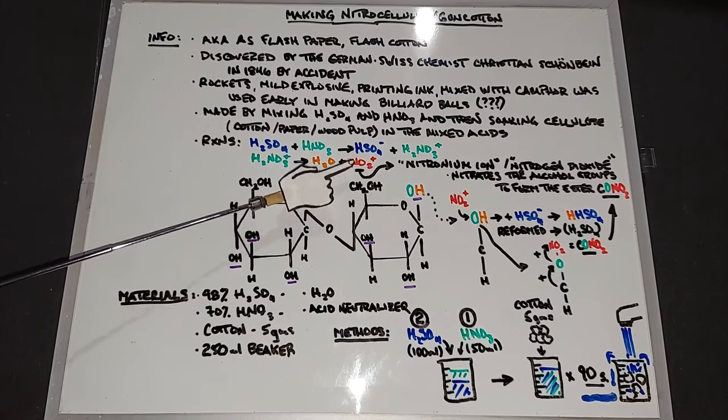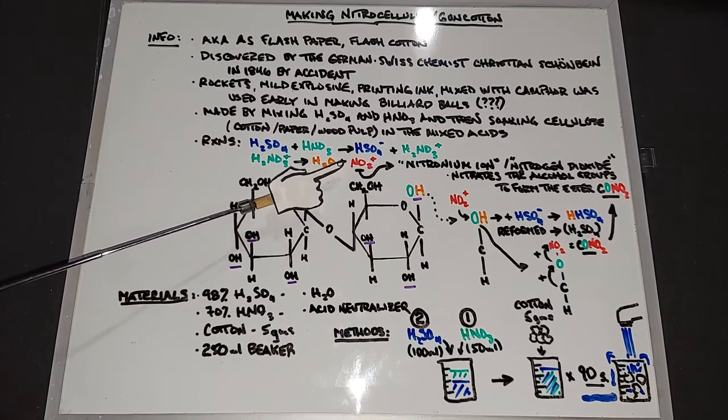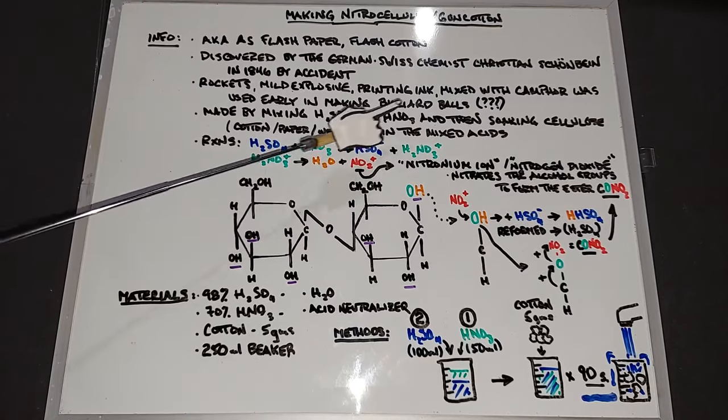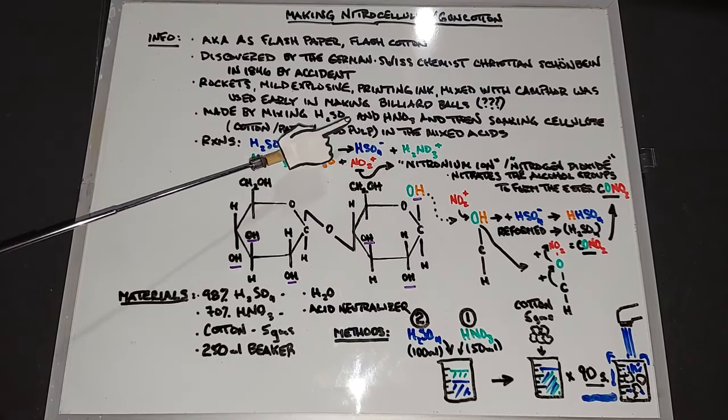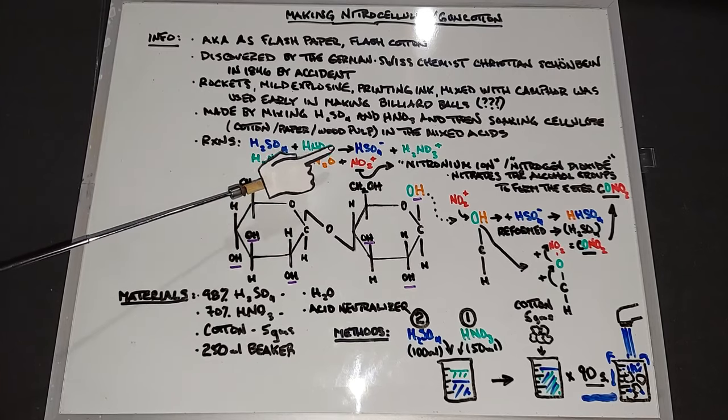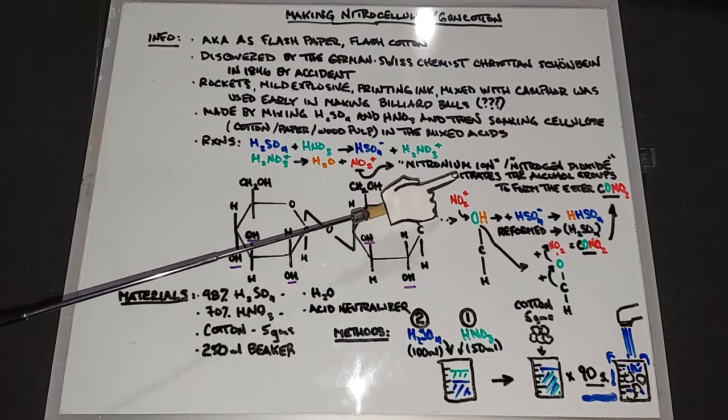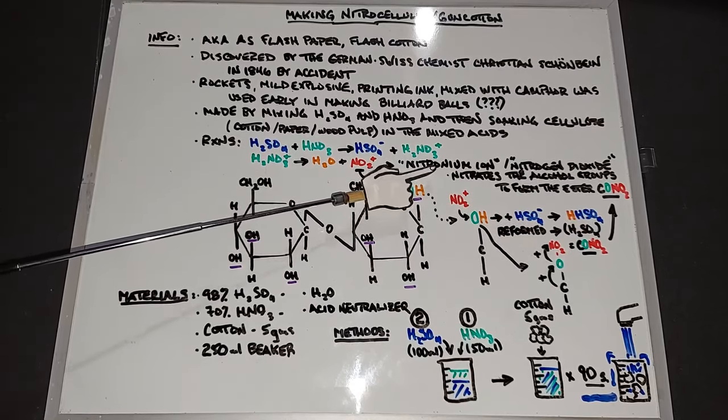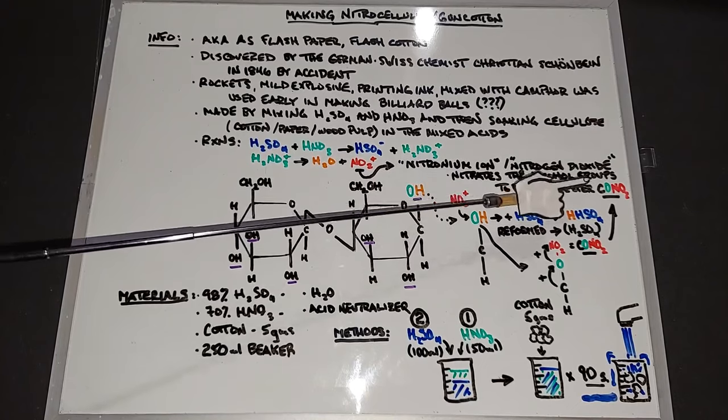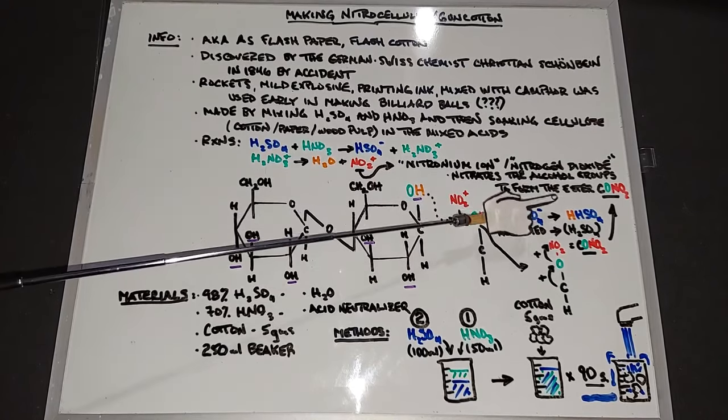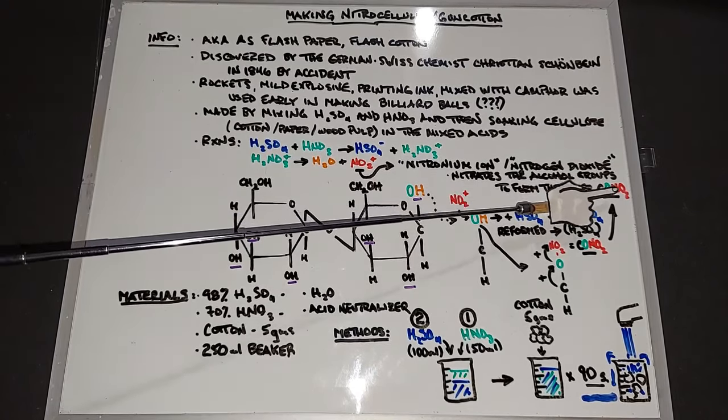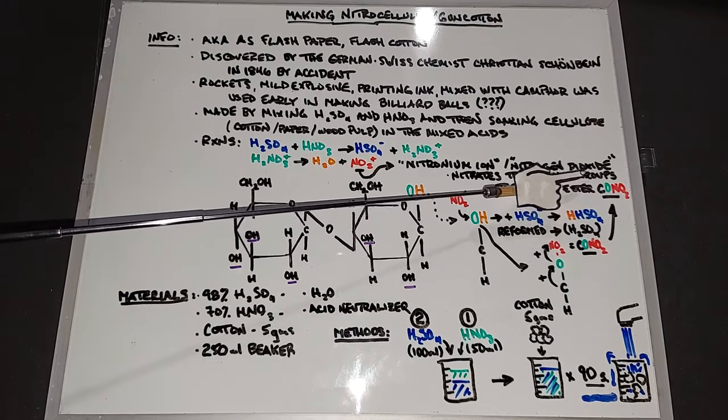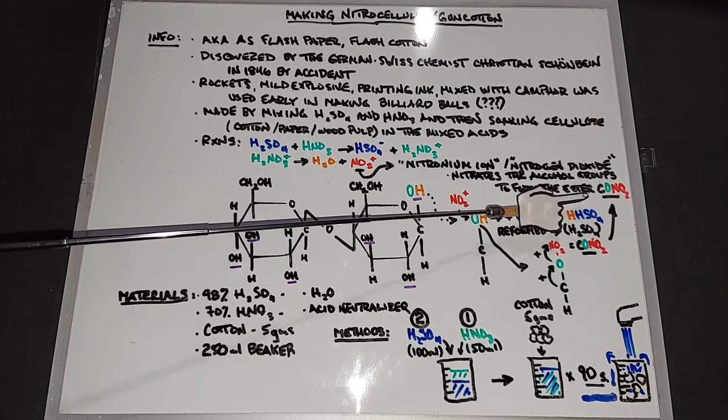This nitronium ion, if the heat is high enough, is released into the air as nitrogen dioxide. That's why in these reactions you keep them cold. When you keep them cold the nitronium ion stays in solution where it can work. This nitronium ion, when kept in solution, nitrates the alcohol groups on the cellulose to form the ester C-O-N-O2.